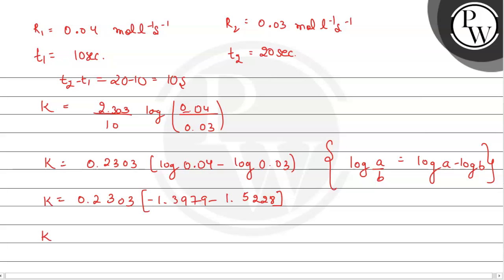So on simplifying, this rate constant K will be equal to 0.02876 second inverse. The unit second inverse confirms that it is a first order reaction.